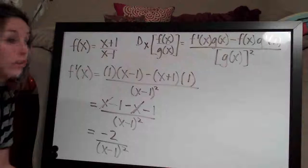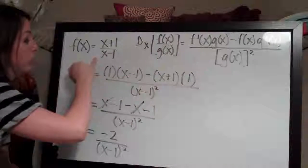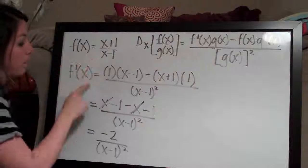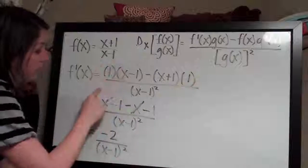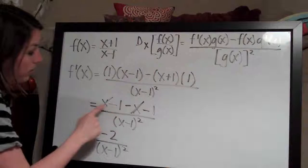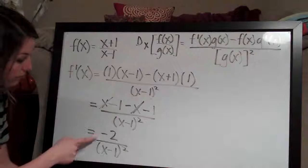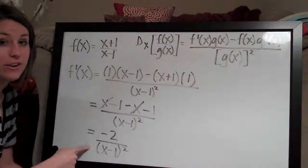And that's actually our final answer. All we need to do was apply the quotient rule to our function to get this function here and then distribute these terms, combine like terms and simplify. And this here, negative 2 over x minus 1 squared, is our final answer.